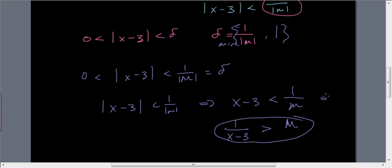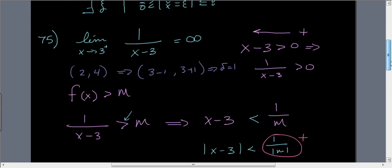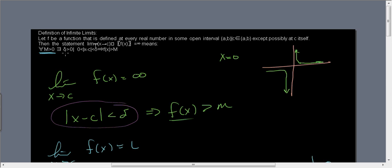So we said, okay, if we let delta be 1 over m, then it's true. And that's all we had to prove. So there's an example of how the formal definition of infinite limits works. Now I'm not expecting you guys to do a formal definition of infinite limits, but I wanted you to see how it works, because eventually you may.